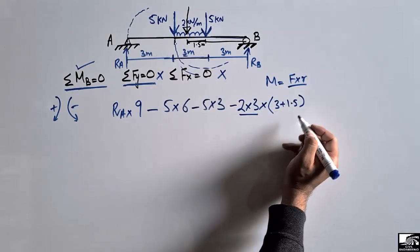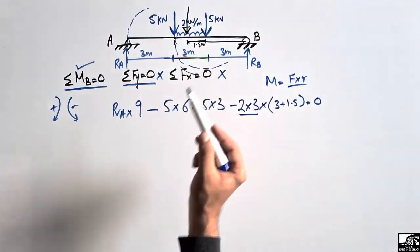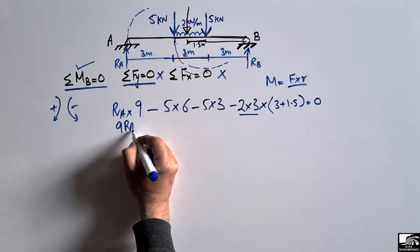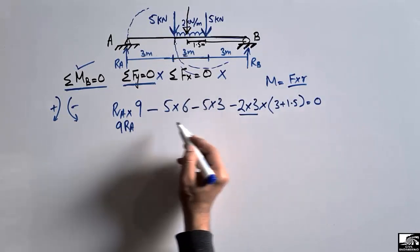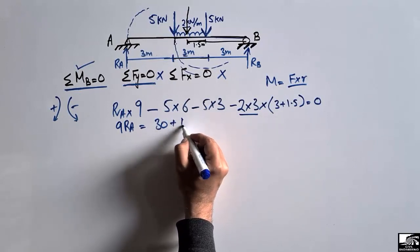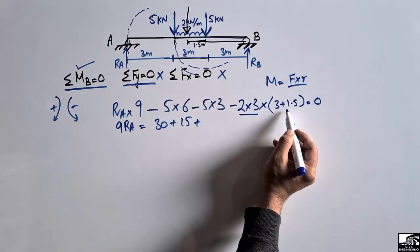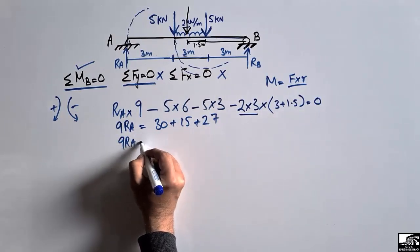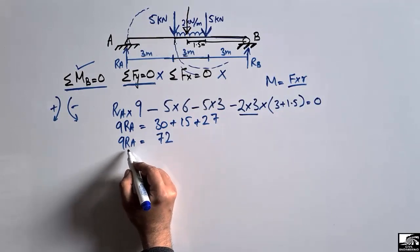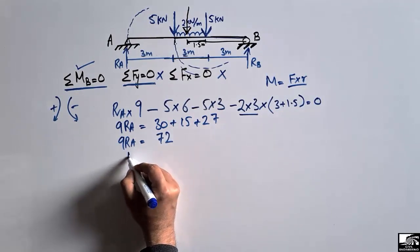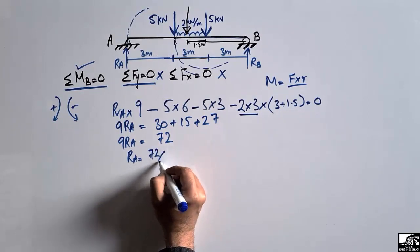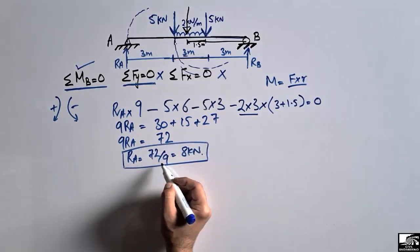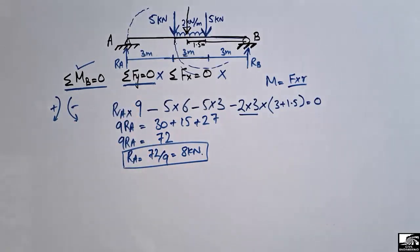Setting the summation of moments about B equal to zero: 9·Ra = 5×6 + 5×3 + 6×4.5 = 30 + 15 + 27 = 72. Dividing both sides by 9, Ra = 72 ÷ 9 = 8 kN. So the support reaction Ra is 8 kN.